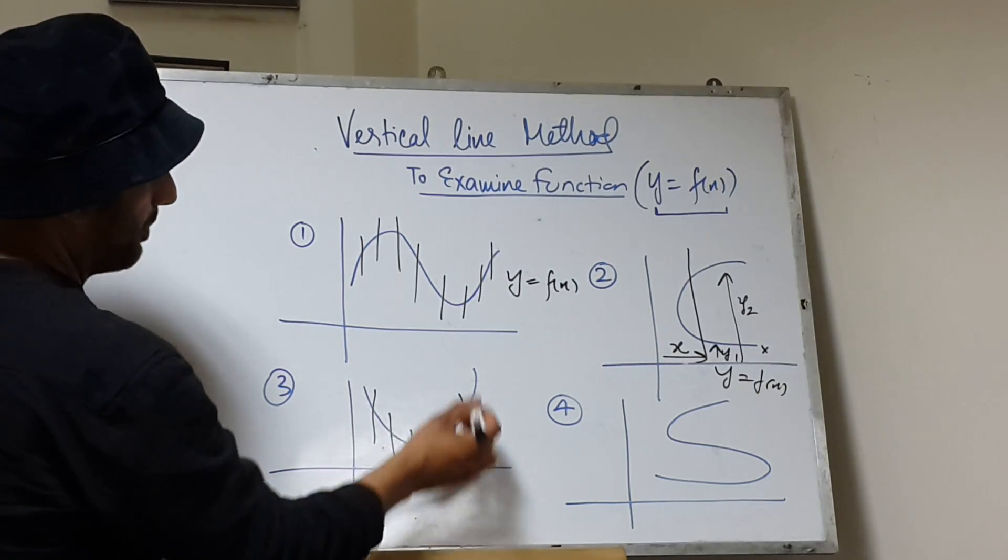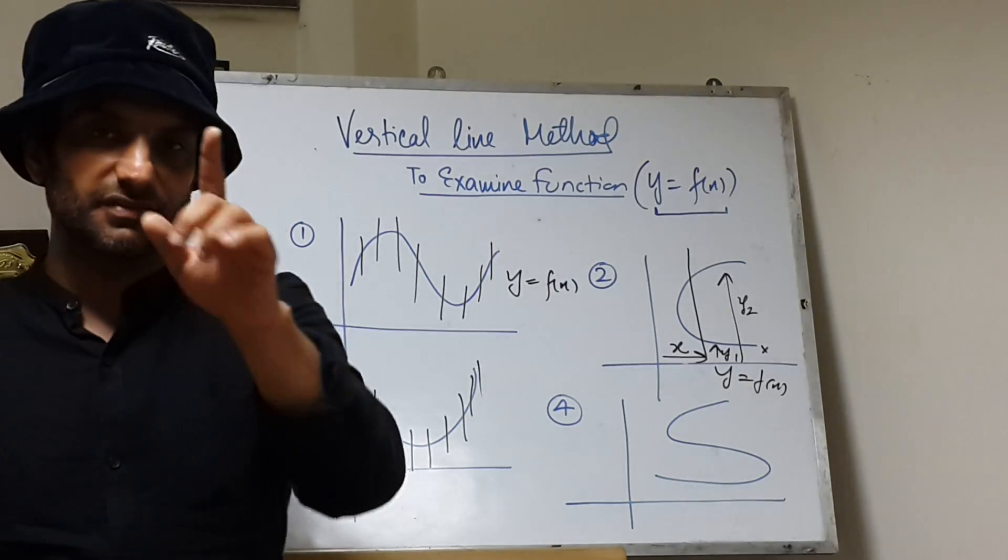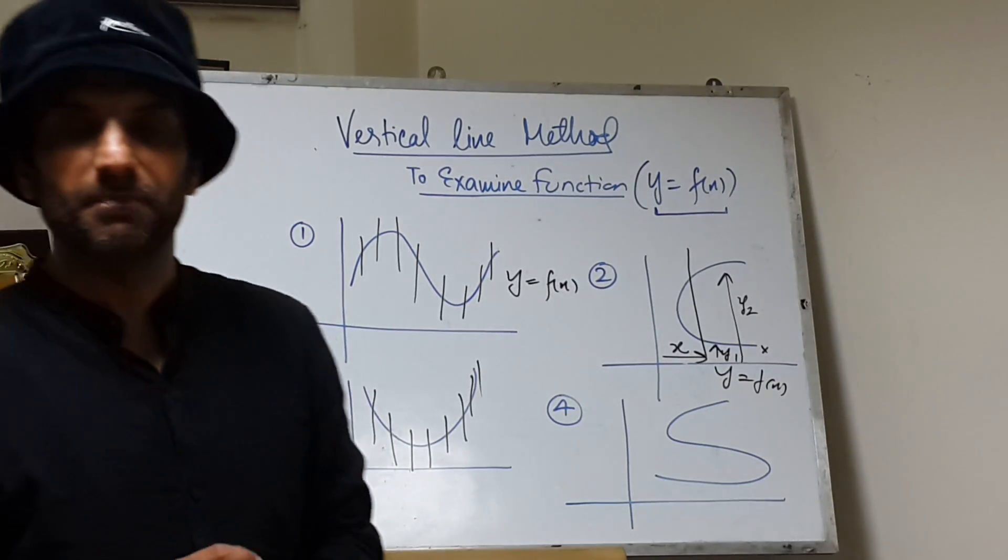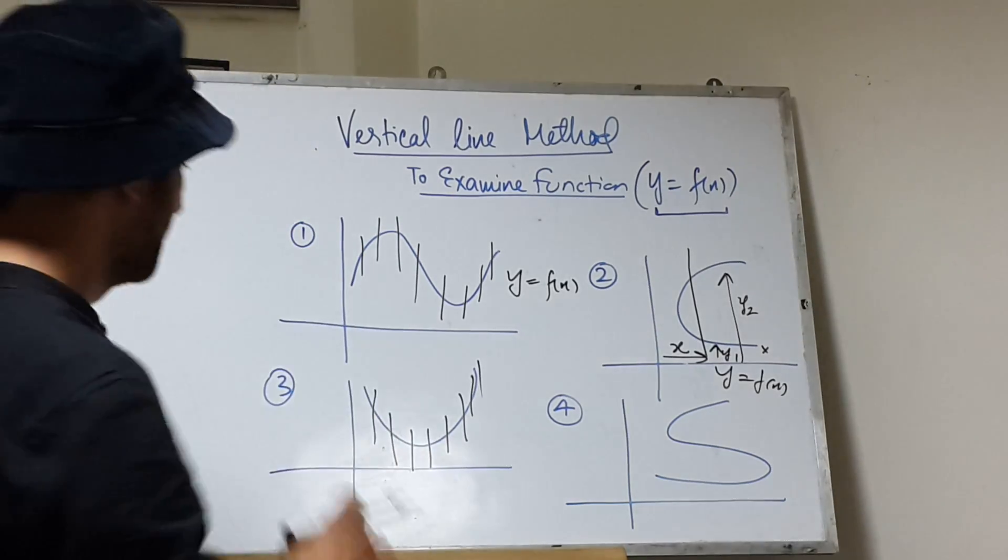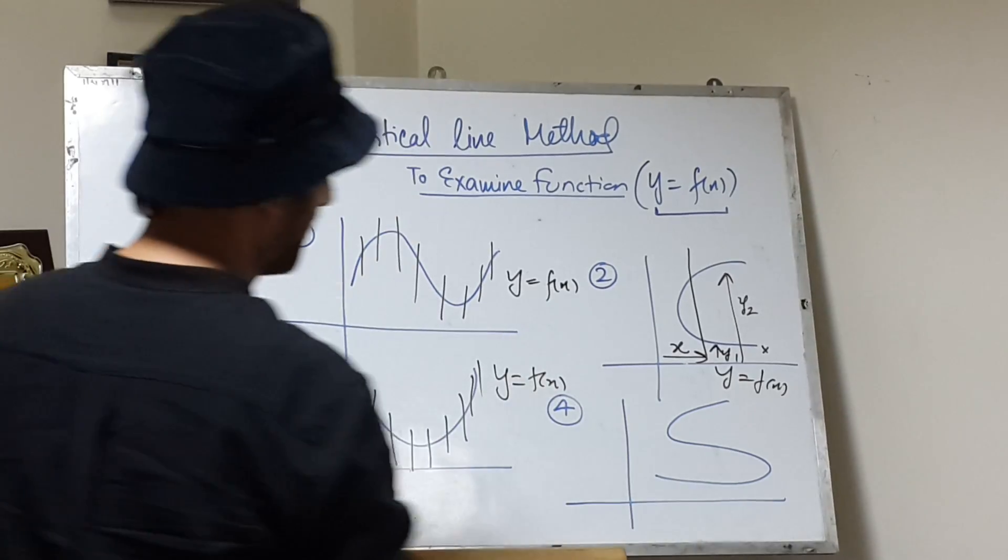You can enjoy plotting the vertical lines because all the vertical lines are cutting the curve at one point only. Each is cutting the curve at only one point. So this is also a function of the type y equals f.